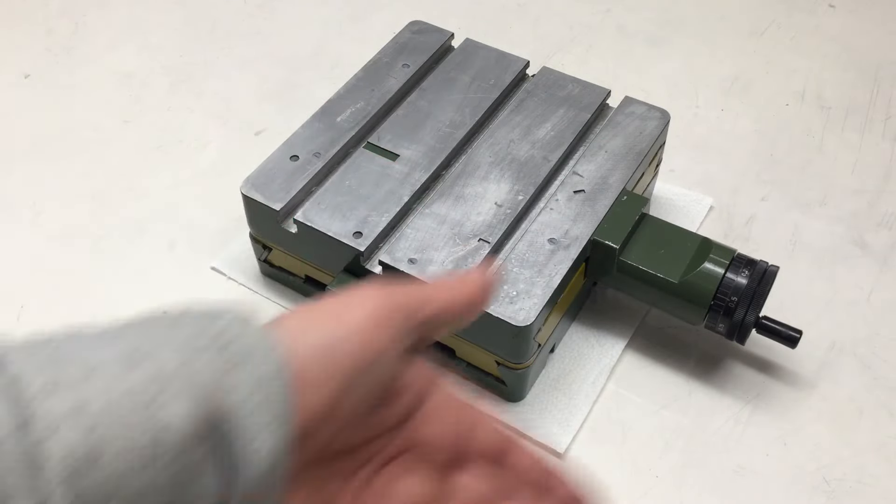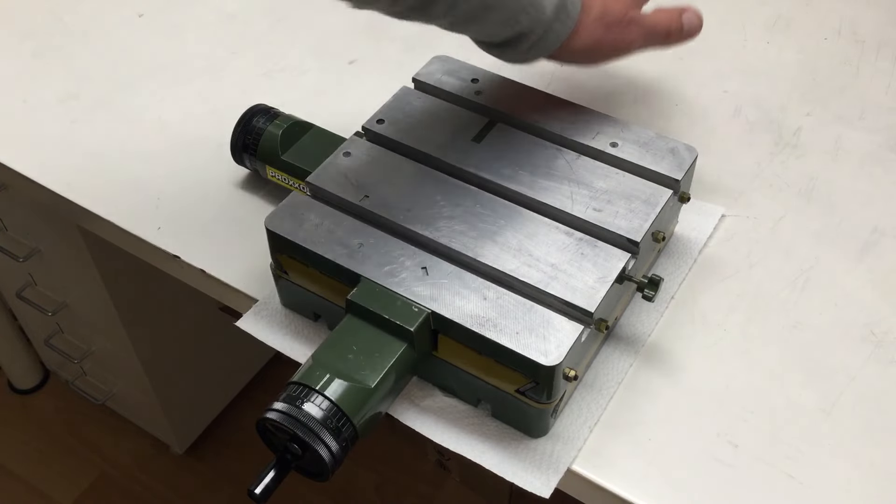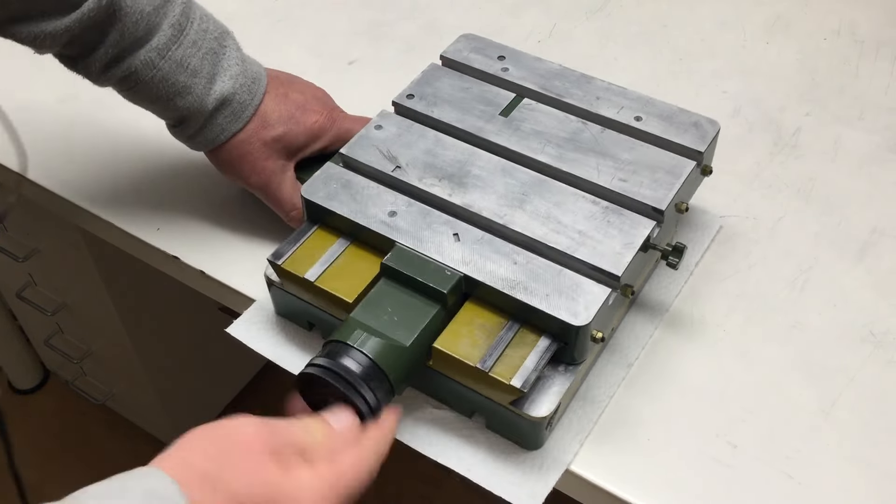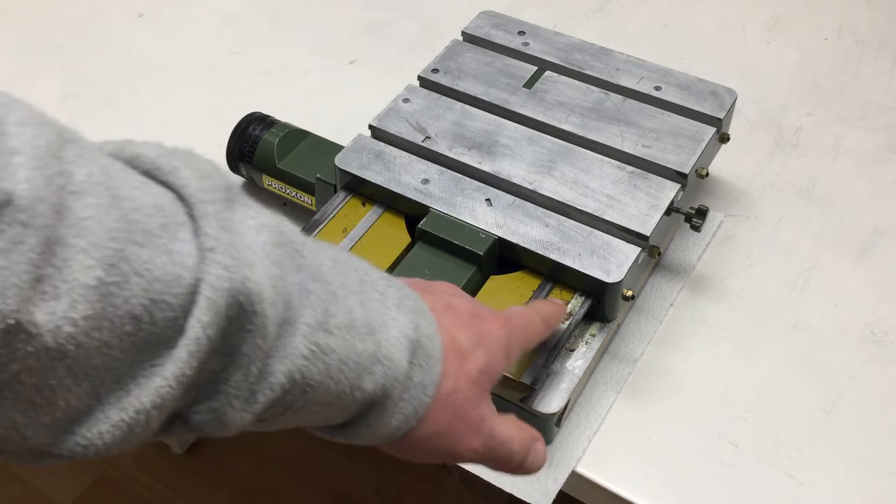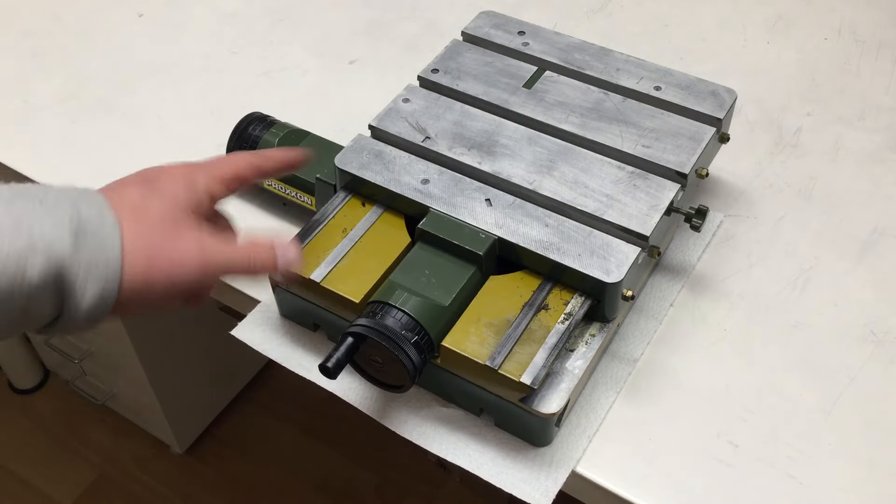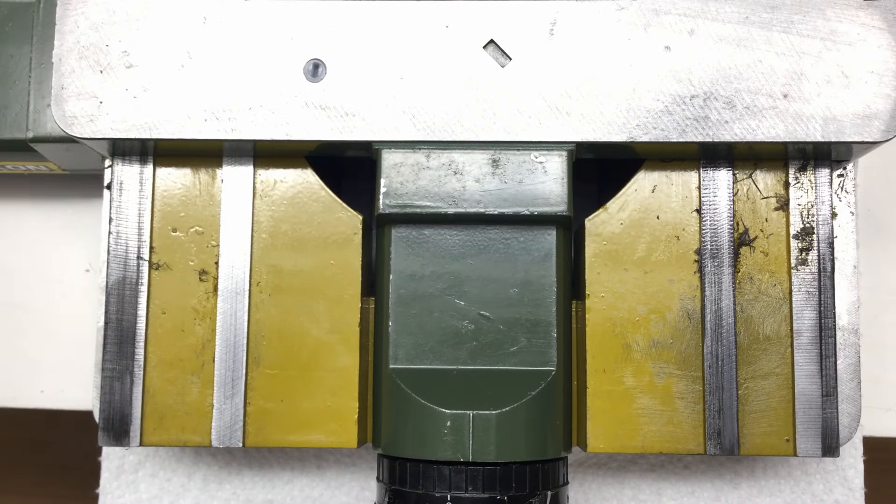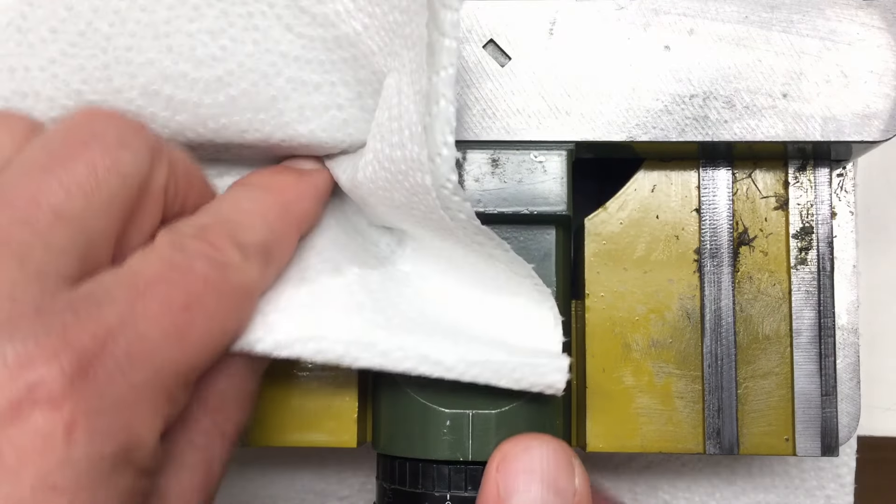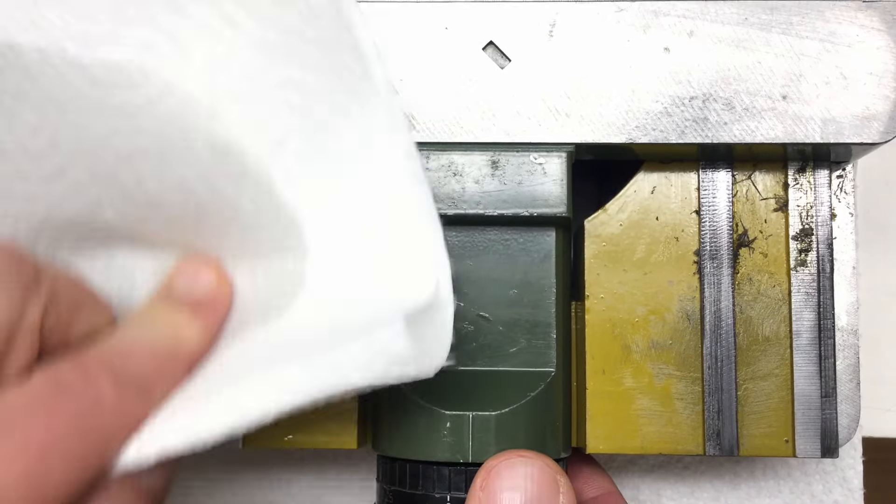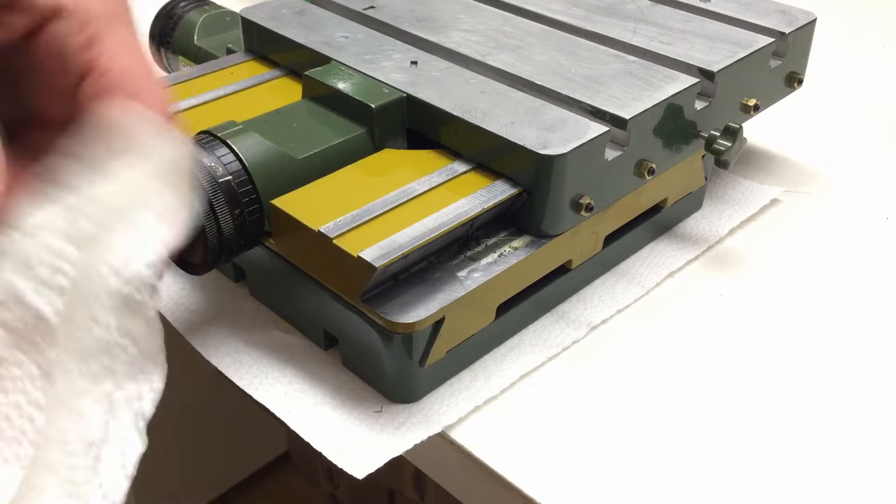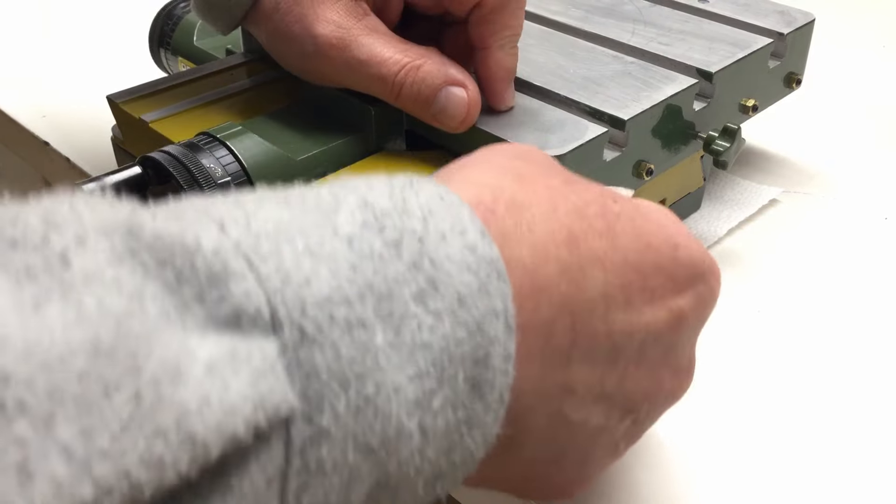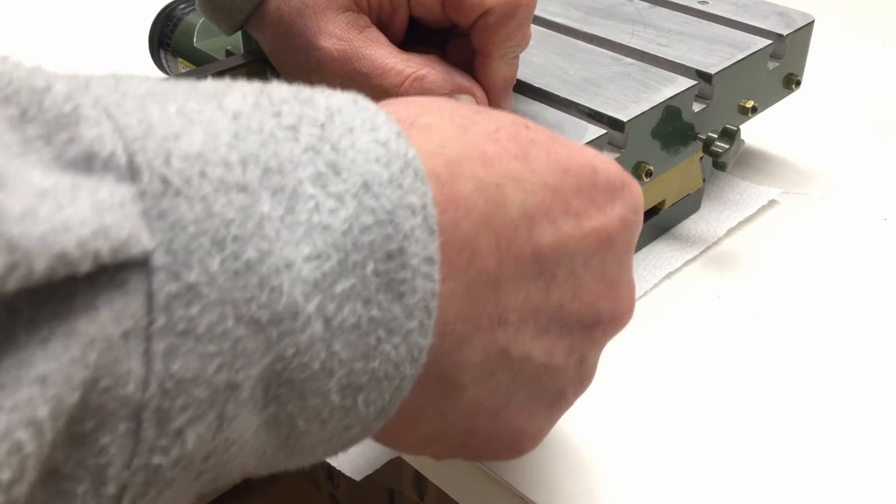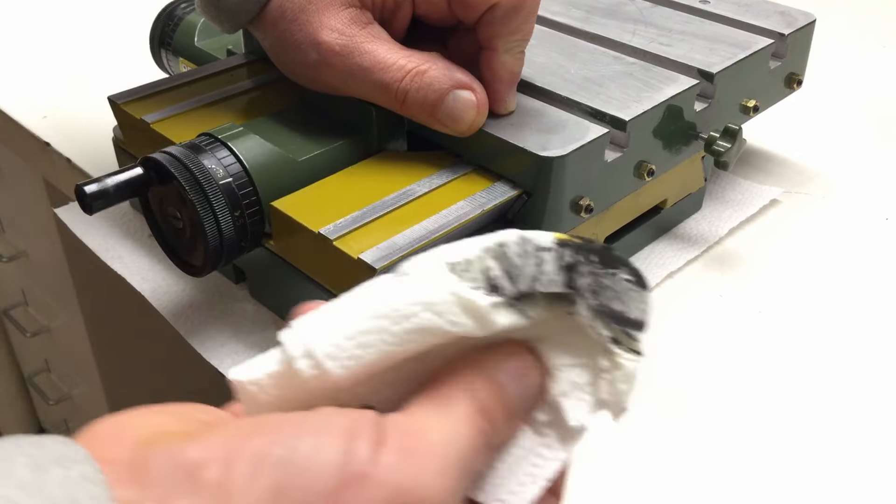Let's start by running the top table all the way in one direction. Because that will already expose here some grime and stuff on the ways. I personally prefer to use denatured alcohol and simple kitchen wipes for such cleaning actions. It's the cheapest option. And I'll do the same, of course, here in the dovetail ways. And there I expect a lot of dirt has accumulated.